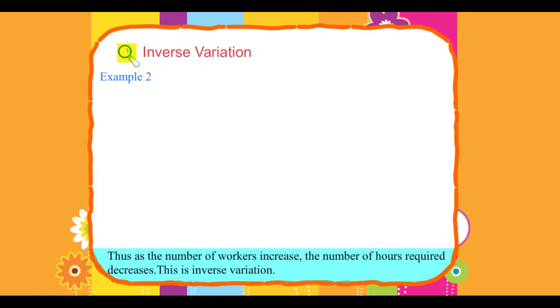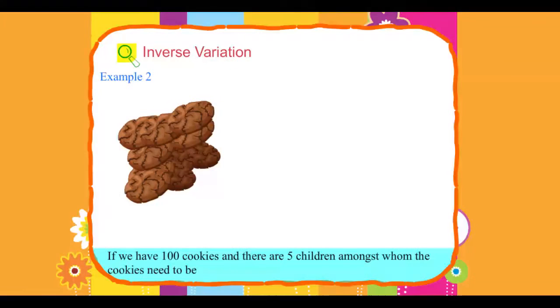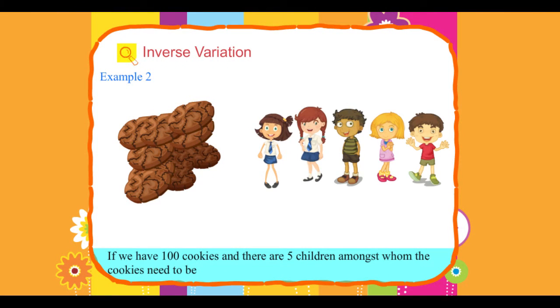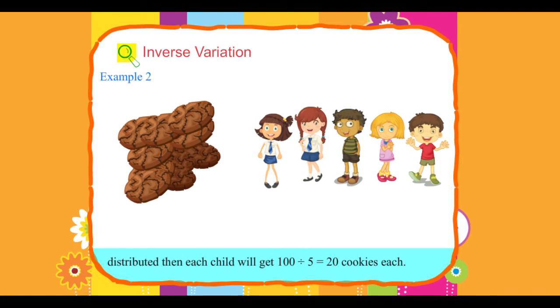Let us consider another example too. If we have 100 cookies and there are 5 children amongst whom the cookies need to be distributed, then each child will get 100 divided by 5 equals 20 cookies each.